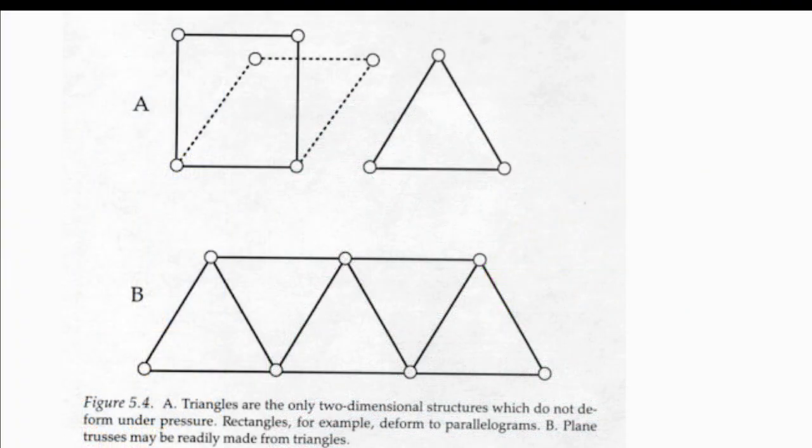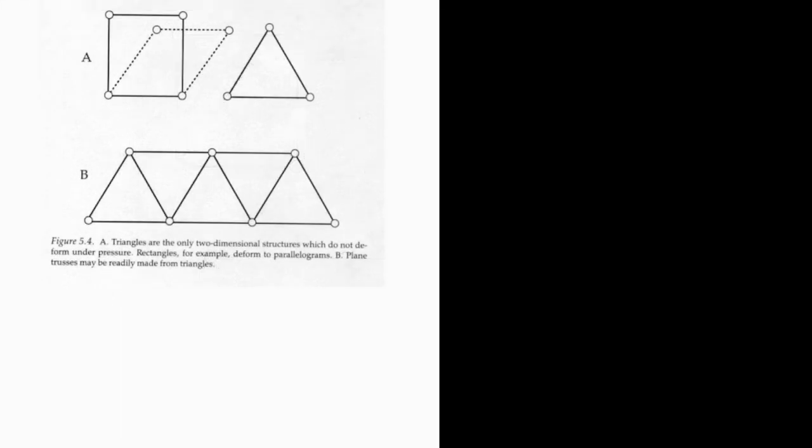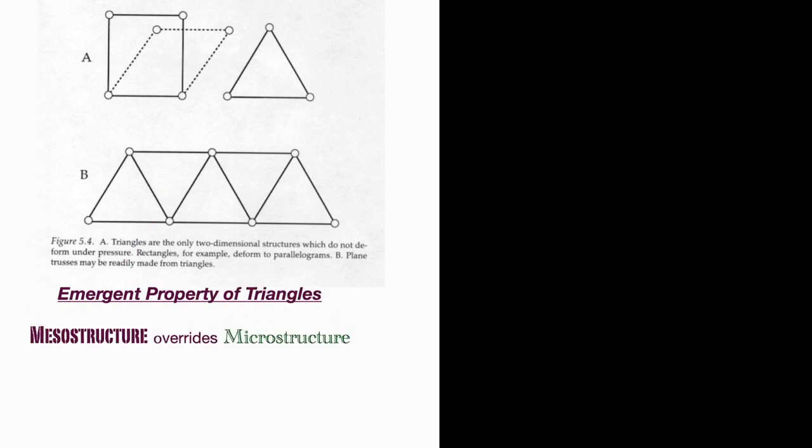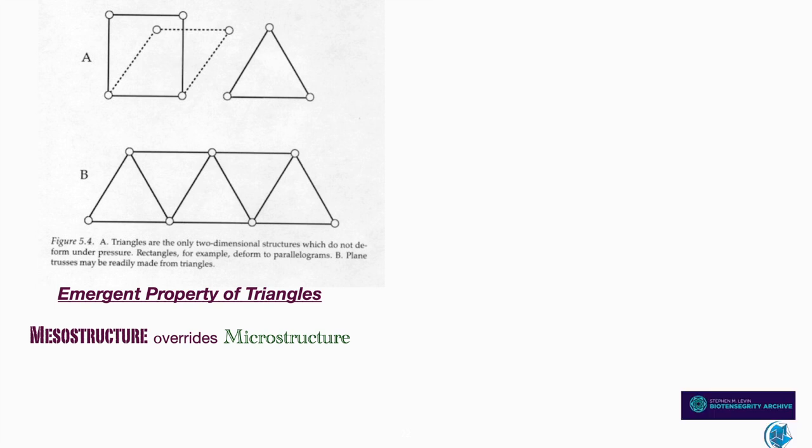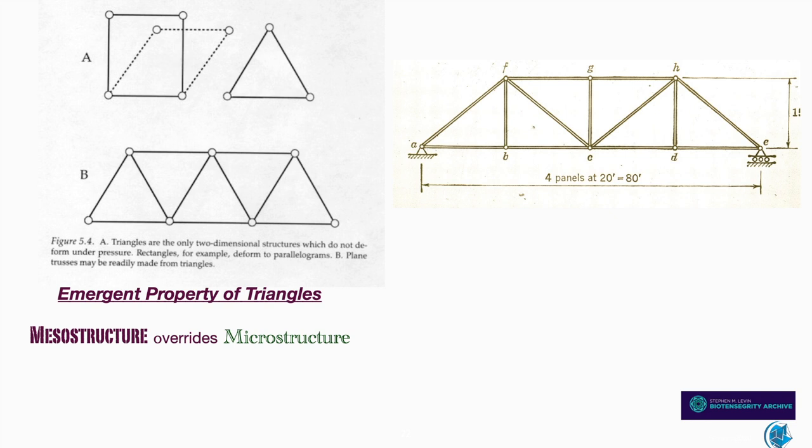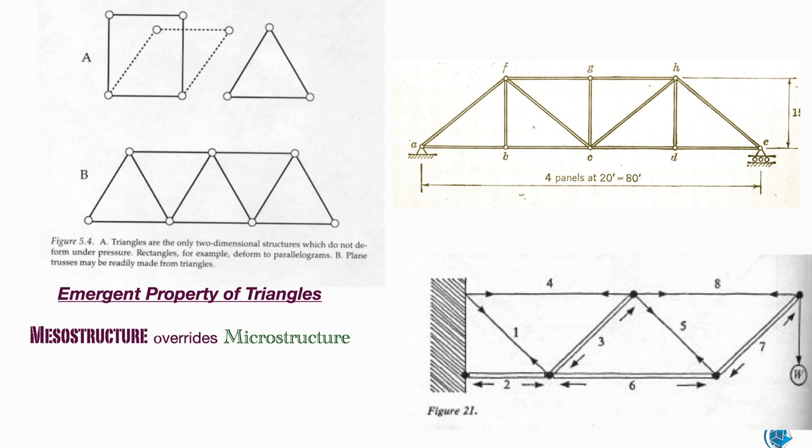Triangles are the only two-dimensional structures that do not deform under pressure. A triangle exhibits emerging properties. These are characteristics that cannot be predicted by examining its component parts. You always have to consider the function of the mesostructure, the triangle as a unit, which overrides the functions of the microstructure, the component parts of the triangle. Even when trusses are constructed with rigid materials, we should always be cognizant of the fact that some of the members are under tension and could be replaced by cables.